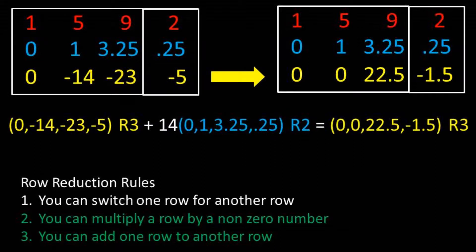Next, let's take row 3 and add 14 times row 2 to get a 0 in column 2, row 3.